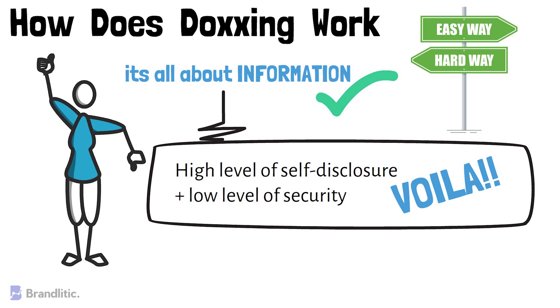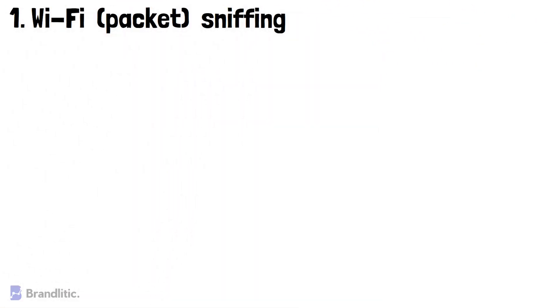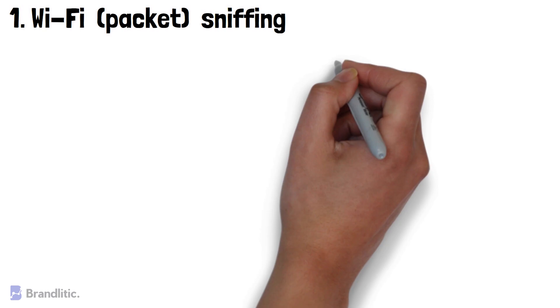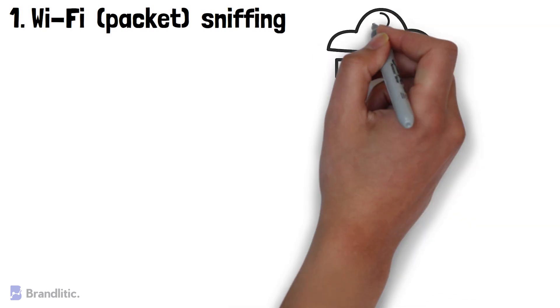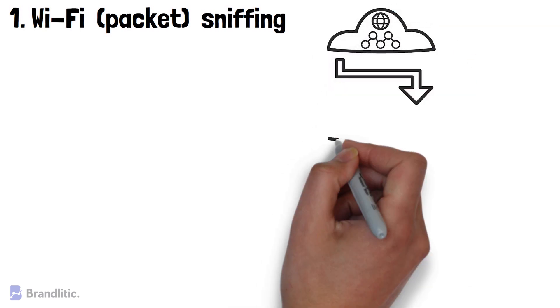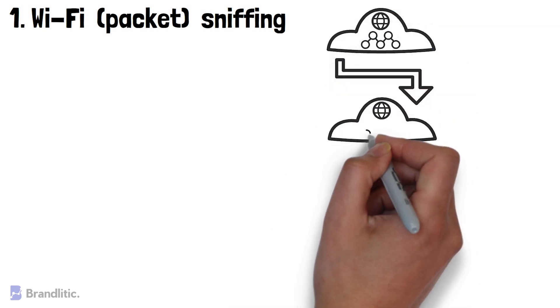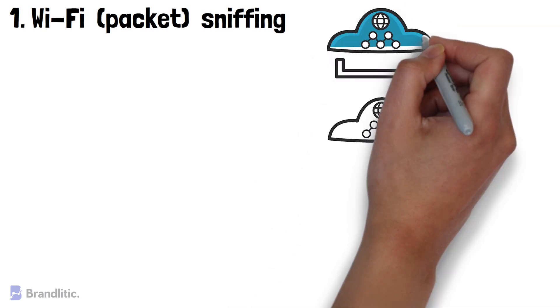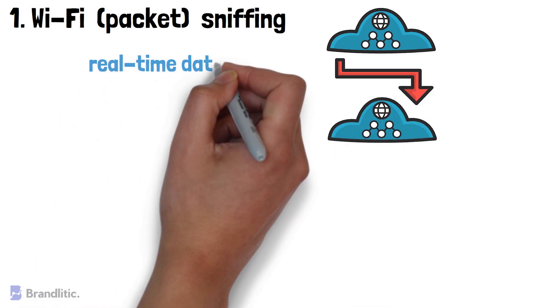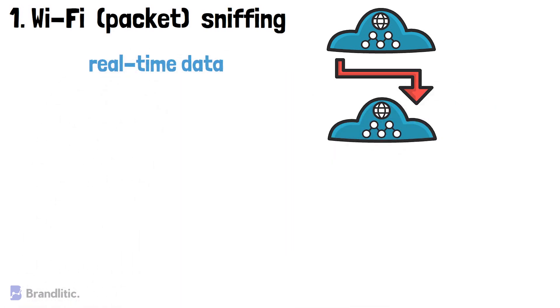Some of the most common techniques include: 1. Wi-Fi or packet sniffing. Public Wi-Fi networks are extremely vulnerable to hacking. A doxer can intercept your internet connection without too much effort and see real-time data like the websites you are visiting.